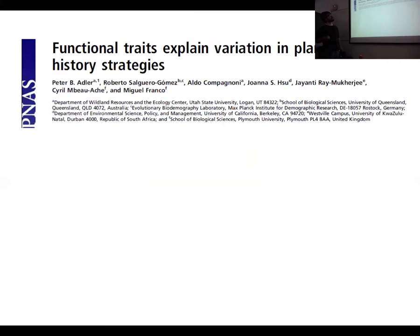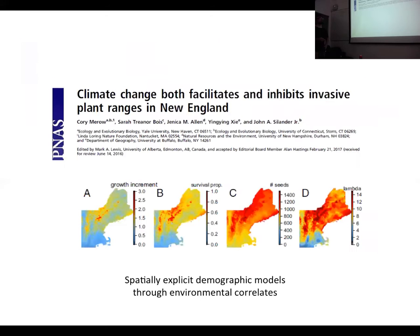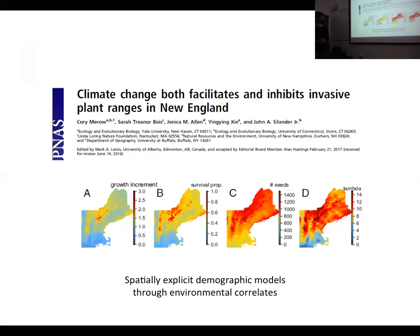There is already one study — with co-authors here — showing that functional traits may be useful for predicting variation in demography, although that study compared across species rather than within species, so we could try to do that within species. Also, some recent work using integral projection models is starting to relate demographic parameters — growth, survival, population growth rate — to environmental correlates.